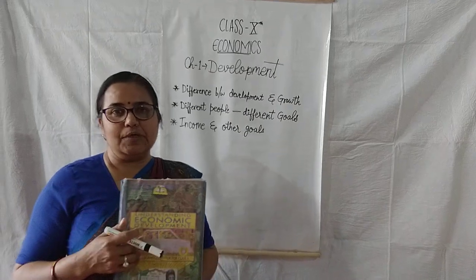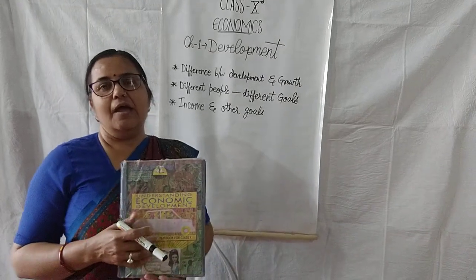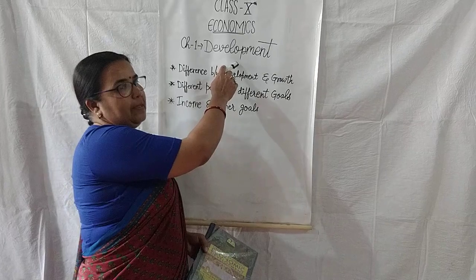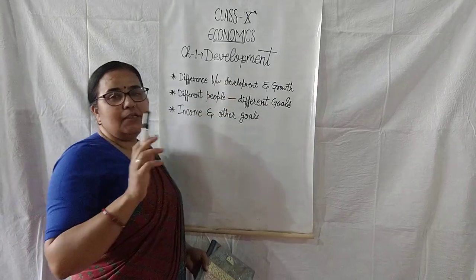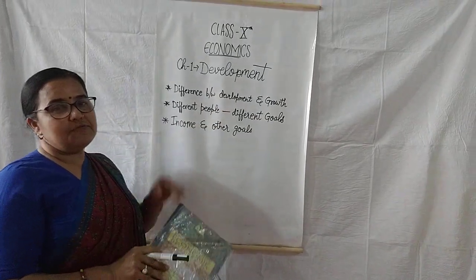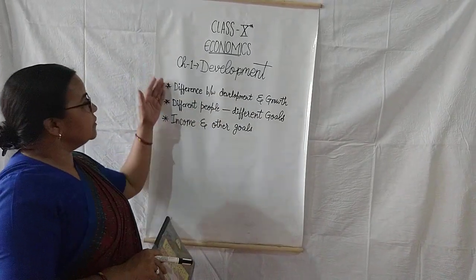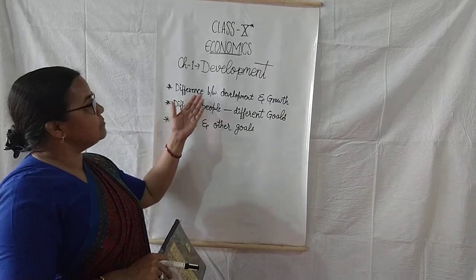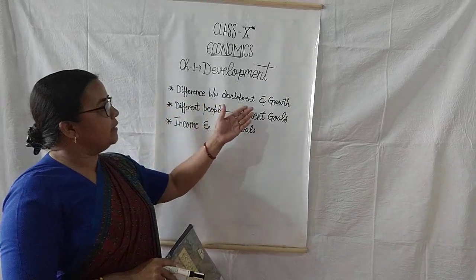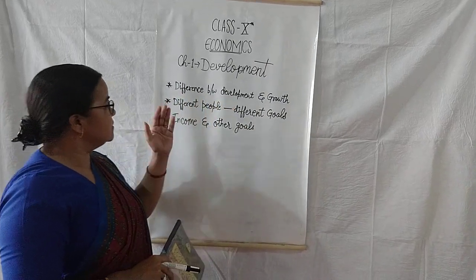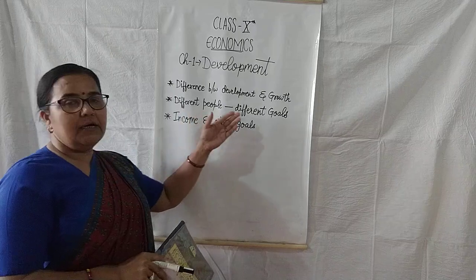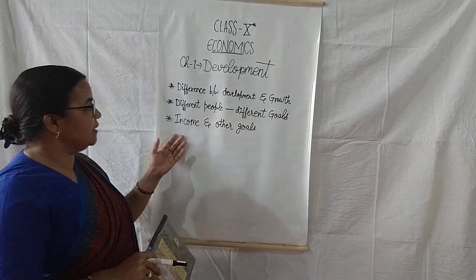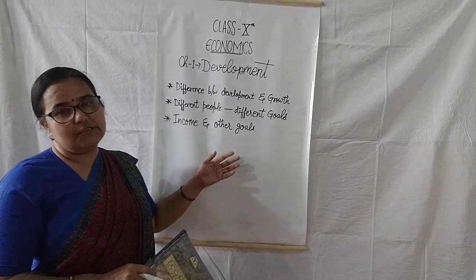This is your book of economics. And in this book, the first chapter is development. So in this particular topic, first we will read these three topics: first one is difference between development and growth, second one is different people and different goals, and the last topic is income and other goals.